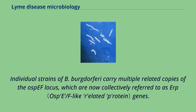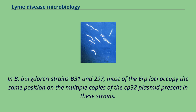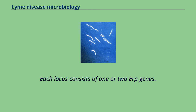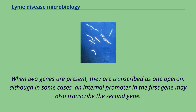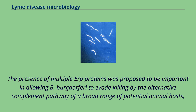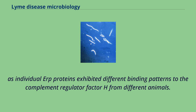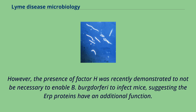Individual strains of B. burgdorferi carry multiple related copies of the OSP locus, which are now collectively referred to as ERP genes. In B. burgdorferi strains B31 and 297, most of the ERP loci occupy the same position on the multiple copies of the CP32 plasmid present in these strains. Each locus consists of one or two ERP genes. When two genes are present, they are transcribed as one operon, although in some cases an internal promoter in the first gene may also transcribe the second gene. The presence of multiple ERP proteins was proposed to be important in allowing B. burgdorferi to evade killing by the alternative complement pathway of a broad range of potential animal hosts, as individual ERP proteins exhibited different binding patterns to the complement regulator factor H from different animals. However, the presence of factor H was recently demonstrated to not be necessary to enable B. burgdorferi to infect mice, suggesting the ERP proteins have an additional function.